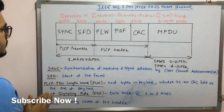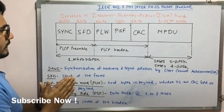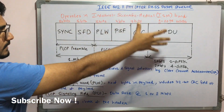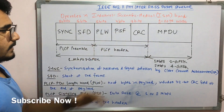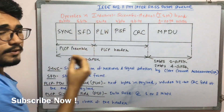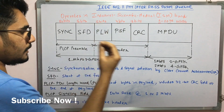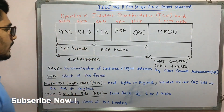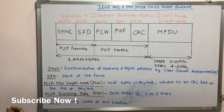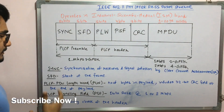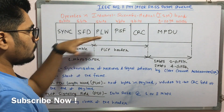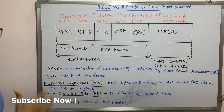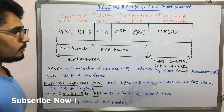Next we have the PLCP PDU length word, PLW. It states the number of bytes which are there in the payload, that is MPDU, and it also includes a 32-bit CRC, that is the cyclic redundancy field, at the end of the payload. Next we have the PLCP signaling field, that is PSF, which mainly deals with the data rate of about 1 to 2 Mbps.